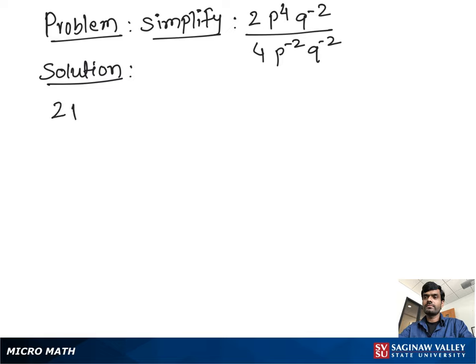Simplify 2p to the power 4, q to the power negative 2, divided by 4p to the power negative 2, q to the power negative 2.